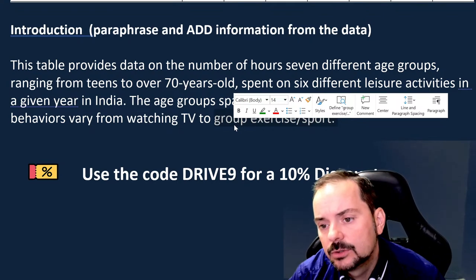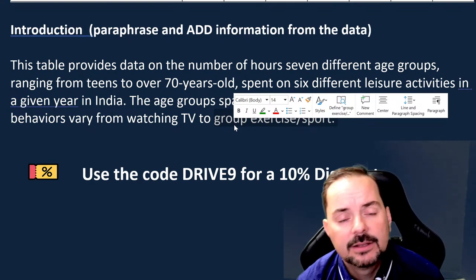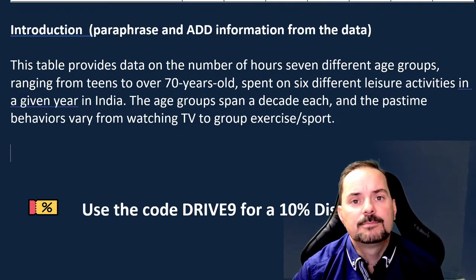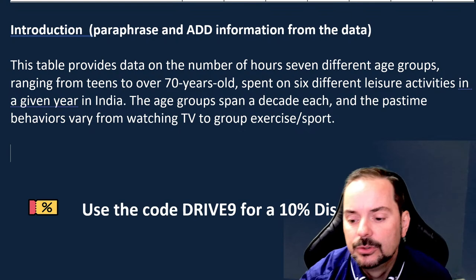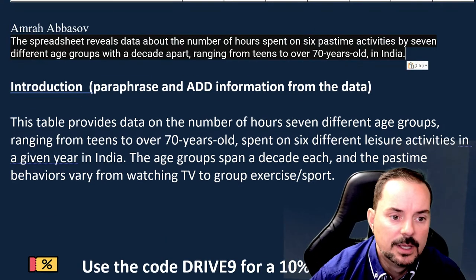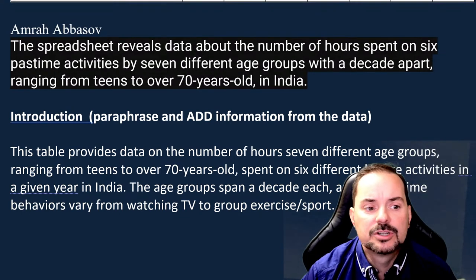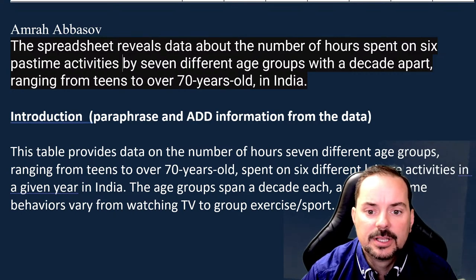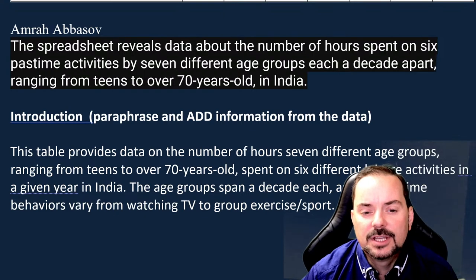I encourage you to write with me — don't just wait for me to give you content. I will look at your writing and make corrections when necessary. Here's a good example by Amra: 'The spreadsheet reveals data about the number of hours spent on six pastime activities by seven different age groups, each a decade apart, ranging from teens to over 70 years old in India.' Amra's order of information is a little different than mine, but it's just as good, and it's nice and concise.